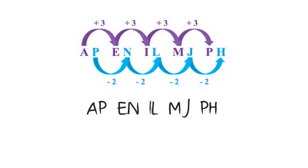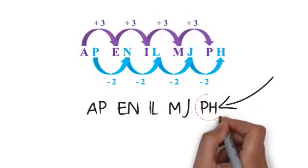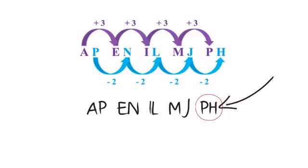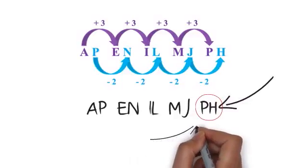You should mark the rule down on your sequence again. When you reach the last letter, which is J, you should continue the pattern once more. J minus 2 is H, so the second half of your answer is H. A-P, E-N, I-L, M-J, P-H.